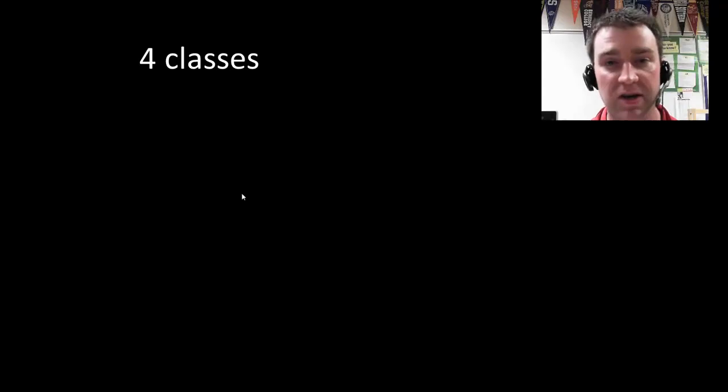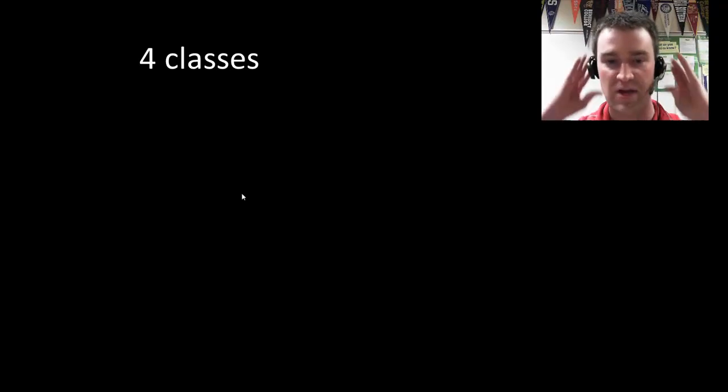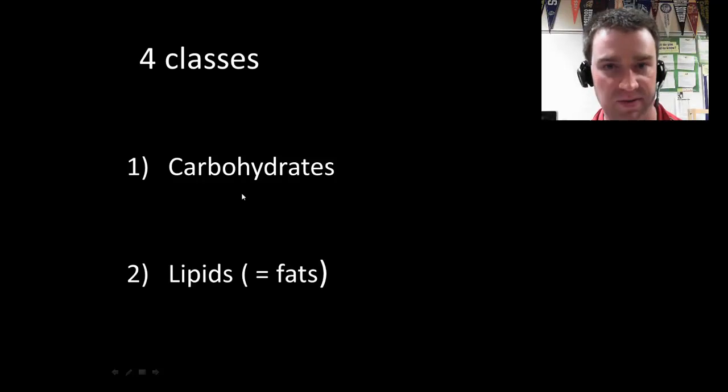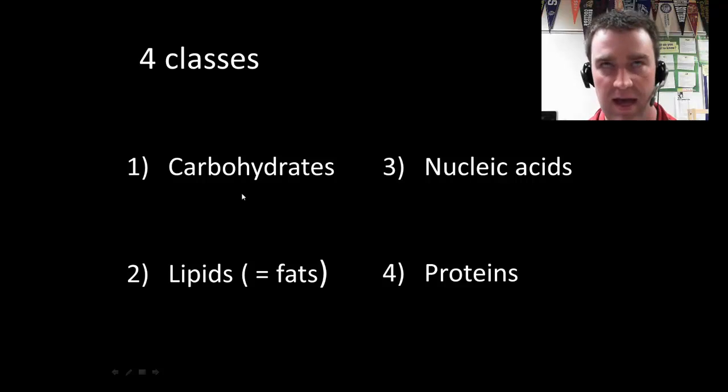So here's just kind of the basic picture again of what's smallest and largest. And so we're going to talk ultimately about four types of macromolecules. We're going to talk about carbohydrates and fats, also called lipids, nucleic acids, and proteins. In this particular video, I'm only going to talk about the first three. Proteins are important enough that they get their own video next.